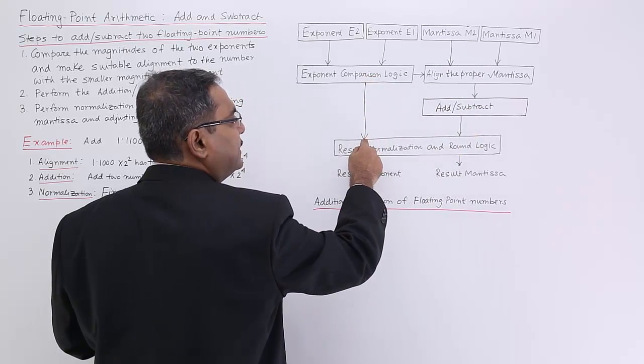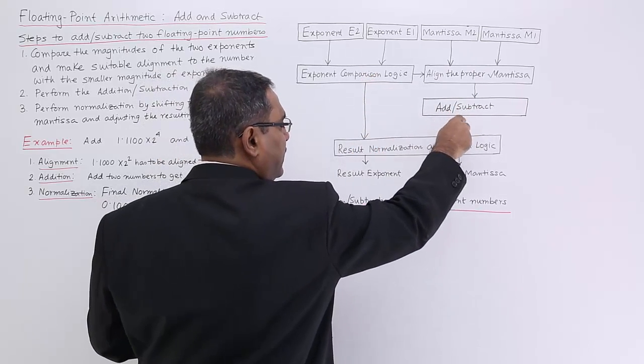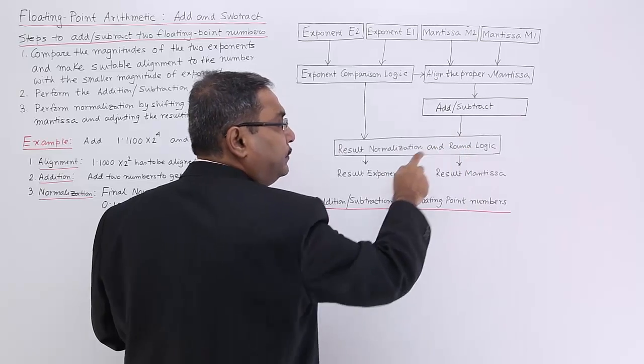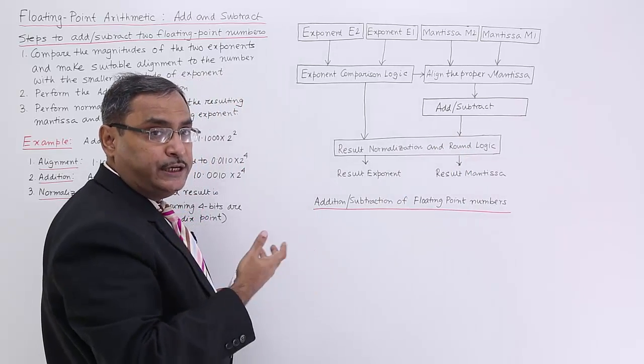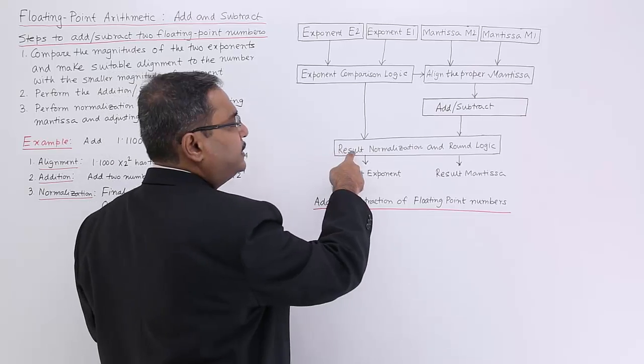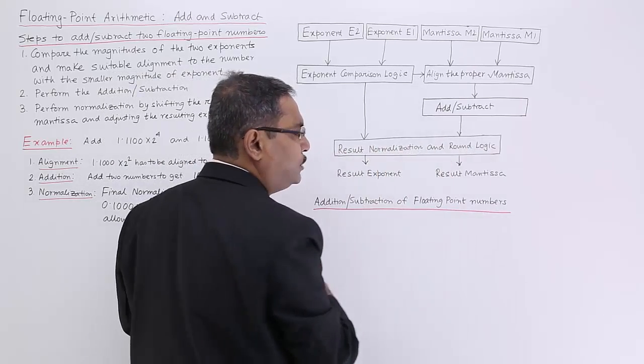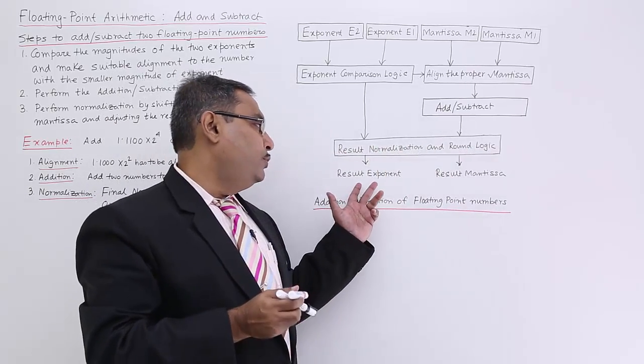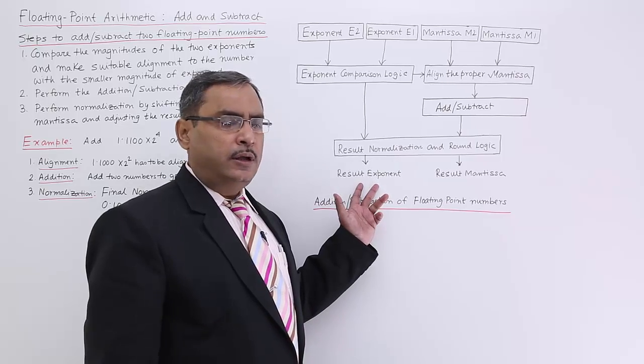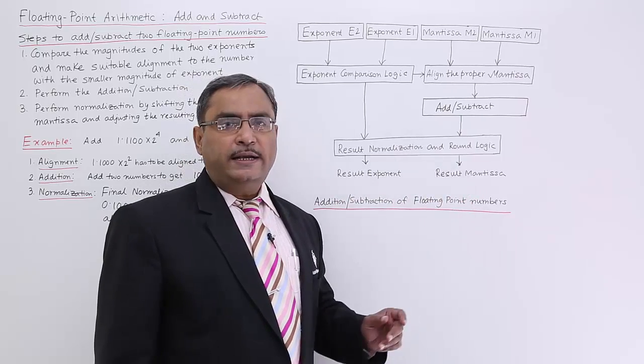Here you are getting the selected exponent value. Here you are getting the mantissa of the result after doing the addition or subtraction. Now, result normalization and rounding logic and thus you are going to get your resultant exponent and the resultant mantissa.